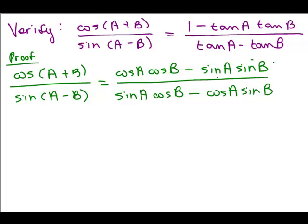So this is what we've got so far, and we're always keeping in mind what we're trying to get to. I'm looking at the top right — I'm trying to get 1 minus tangent A tangent B. I have something that looks close in a way, because I've got two terms with a minus sign in the numerator, just like I have in the target. And in the denominator I also have two terms with a subtraction sign. So I wonder if there's some way of manipulating this to get it to look like that.